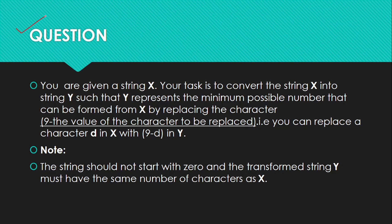So this is our question. You are given a string X. Your task is to convert string X into string Y such that Y represents the minimum possible number that can be found from X by replacing a character d in X with 9 minus d in Y. So you have to find out the minimum possible number using the formula 9 minus the value of the character to be replaced.